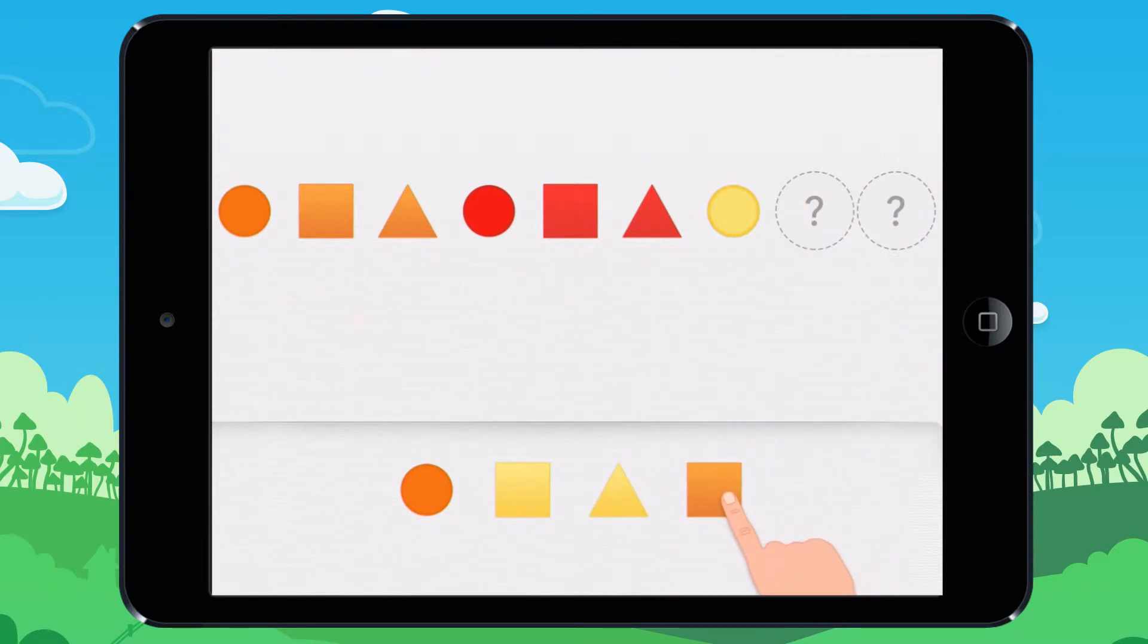First look at these shapes. A circle. A square. A triangle. A circle. A square. A triangle. A circle.